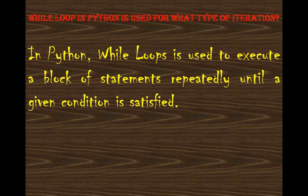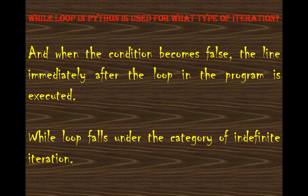For which type of iteration is a while loop used in Python? A while loop is used to execute a block of statements until a given condition is satisfied. It is used for indefinite iteration. When the condition becomes false, the line immediately after the loop in the program is executed — it comes out of the while loop.